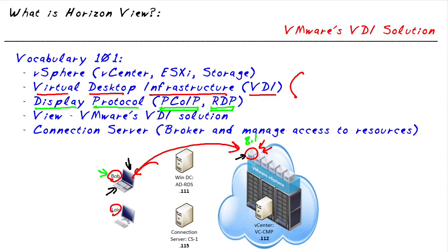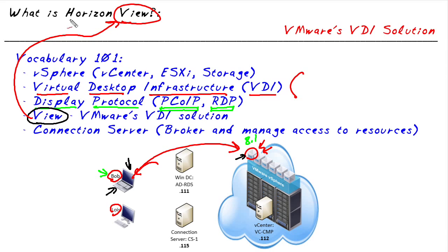The tools and processes by which VMware implements their virtual desktop infrastructure is by a product called View. And View is a subset of a larger product called Horizon. So specifically, Horizon View is VMware's VDI solution.